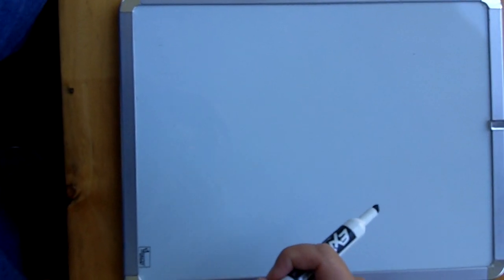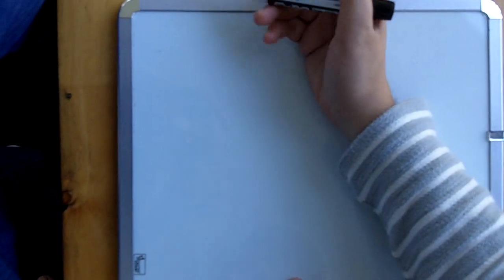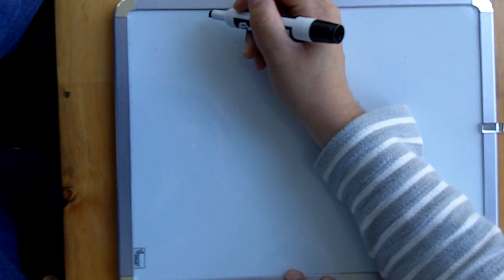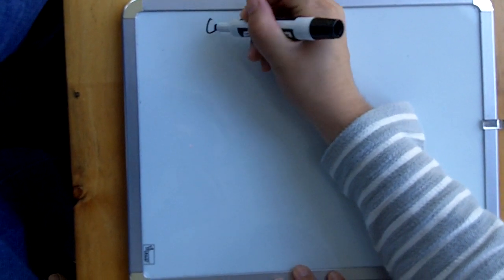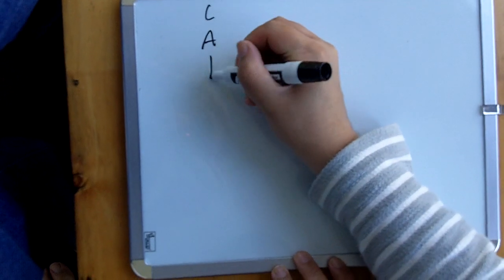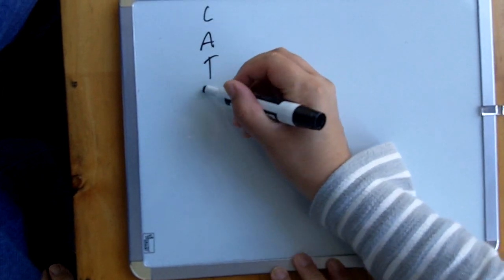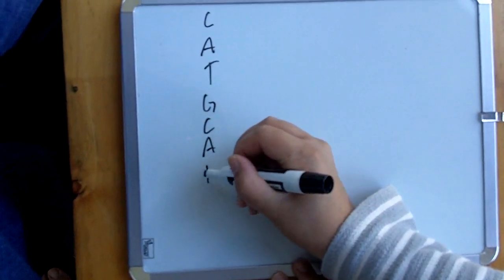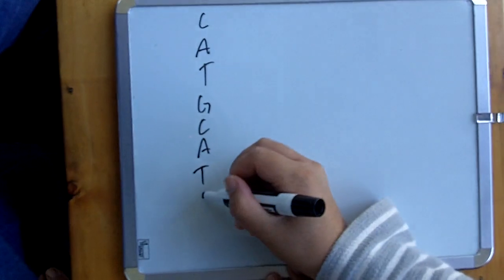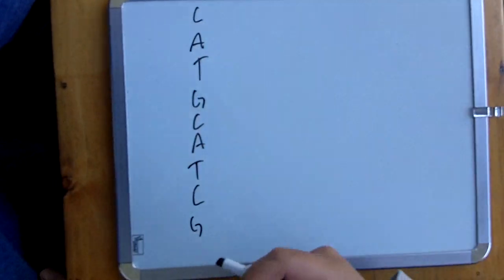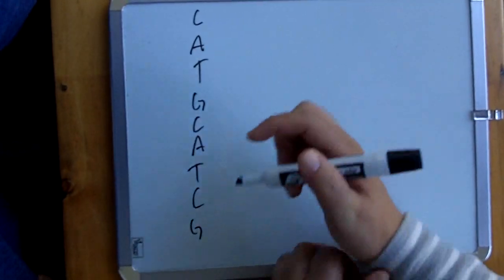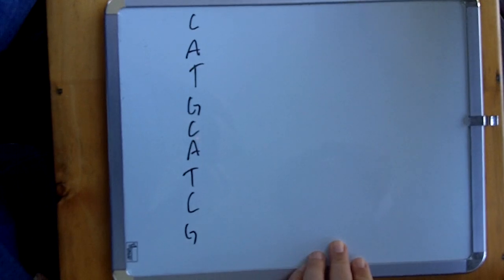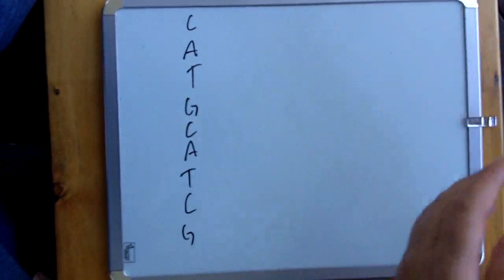We're going to talk about protein synthesis. We're going to start off with what we call the coding strand. So we're just going to put C, A, T, G, C, A, T, C, G — this is completely random, by the way. So again, this is the coding strand.